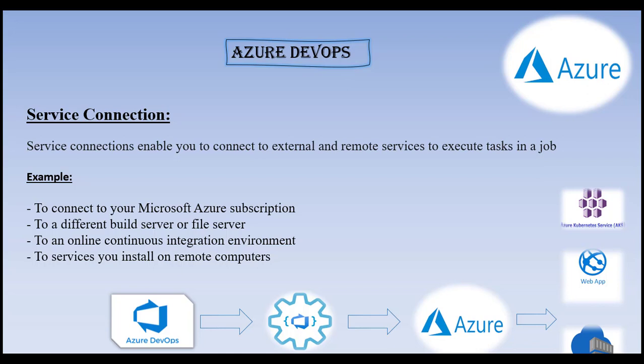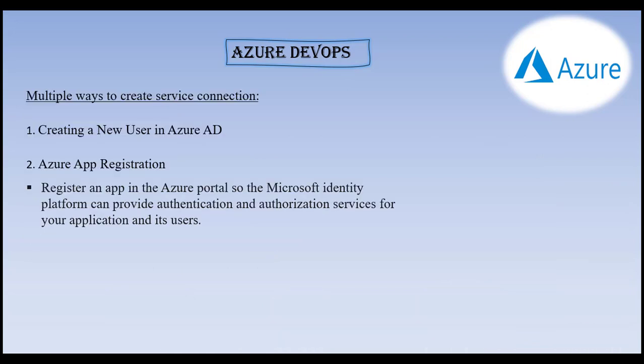There are multiple ways of creating a service connection. We'll see two ways. In the first way, I'll create a user using Azure AD and set up a service connection. In the second way, we'll create an app registration, register our app, and make use of the Microsoft Identity Platform, which provides authentication and authorization to our application and its users. Let's see the second method first.